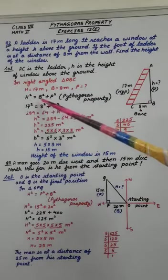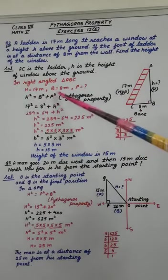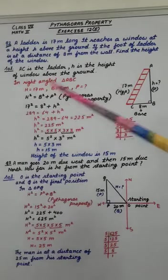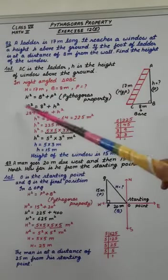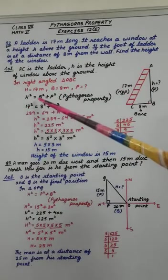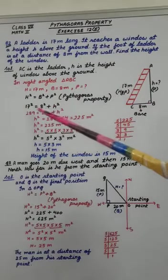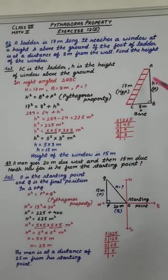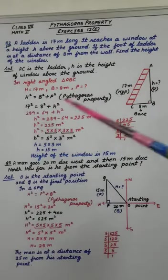H square equals B square plus P square. So, H is 17. So, 17 square equals base, which is 8, so 8 square plus perpendicular that is H, H square.